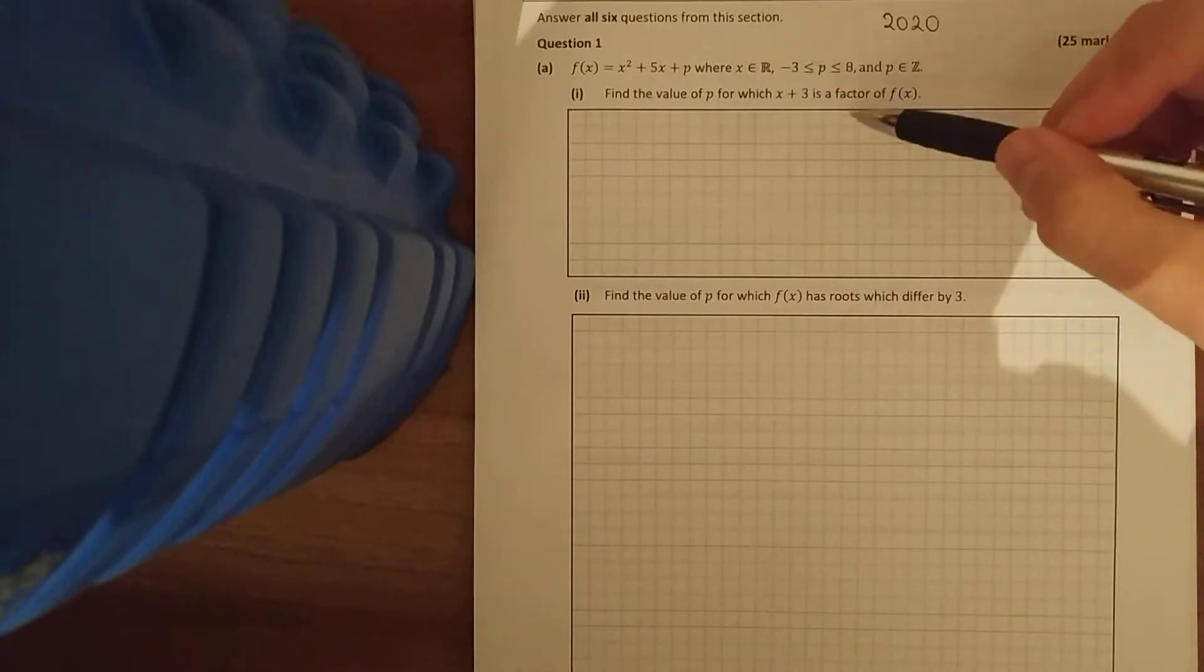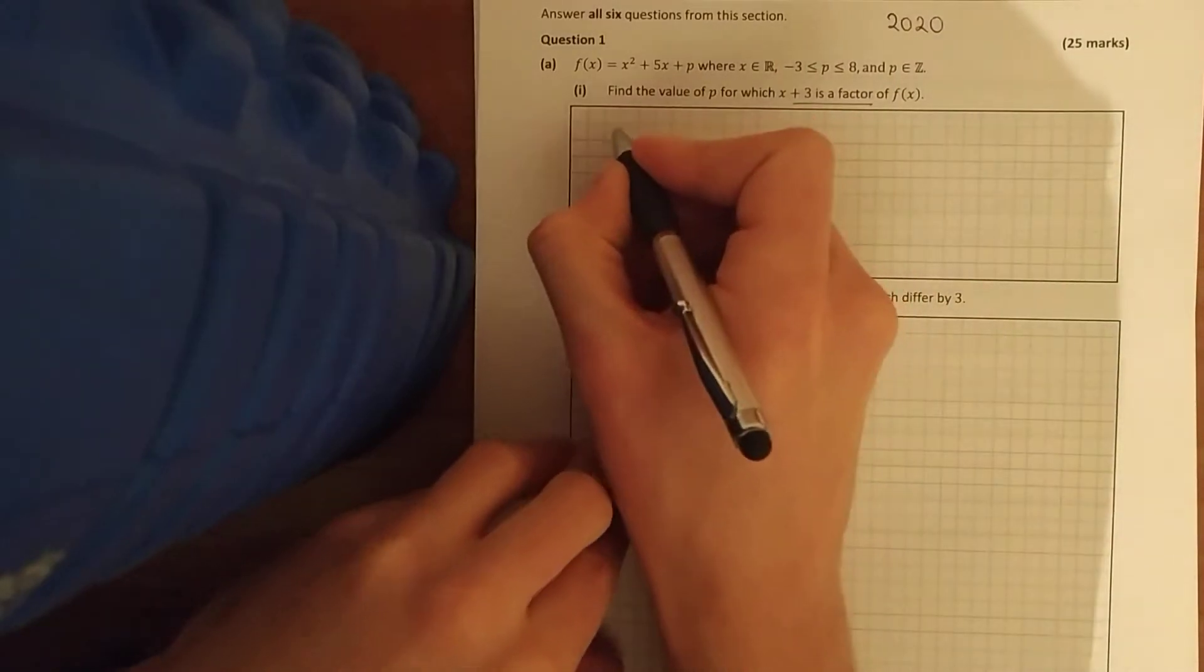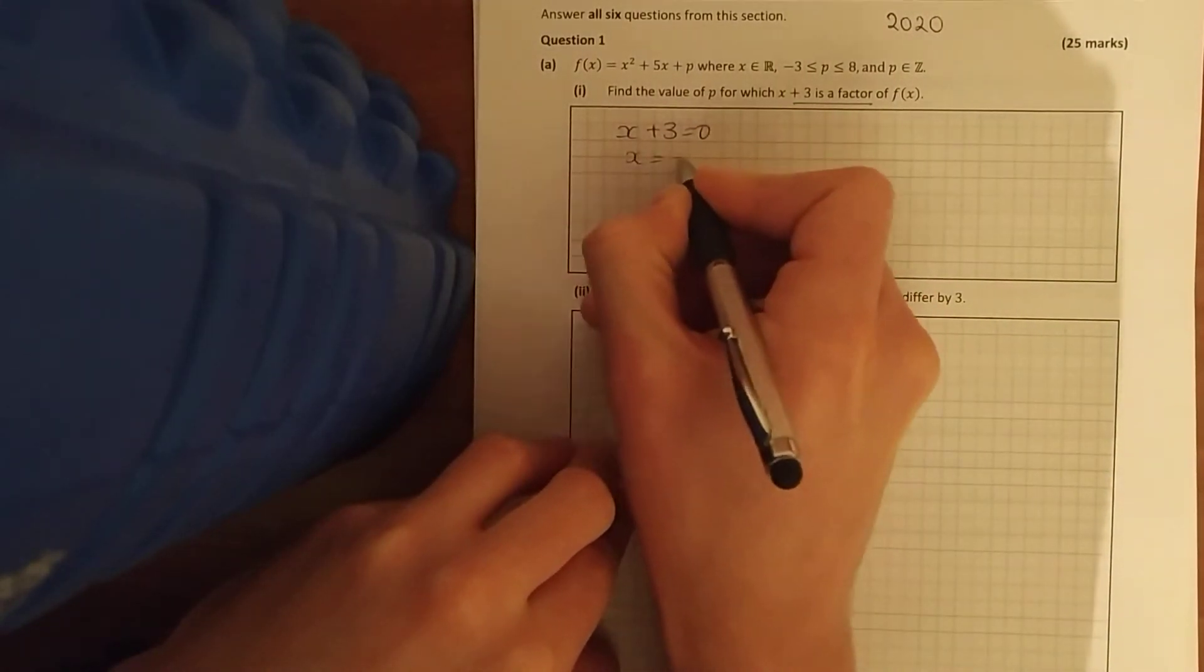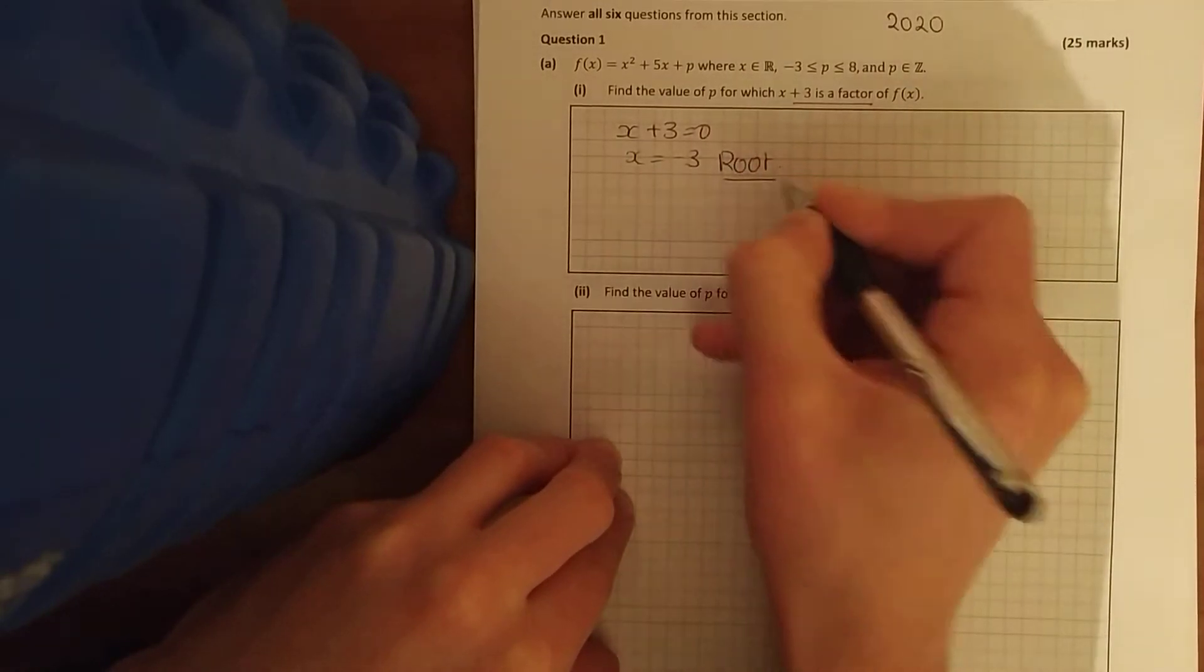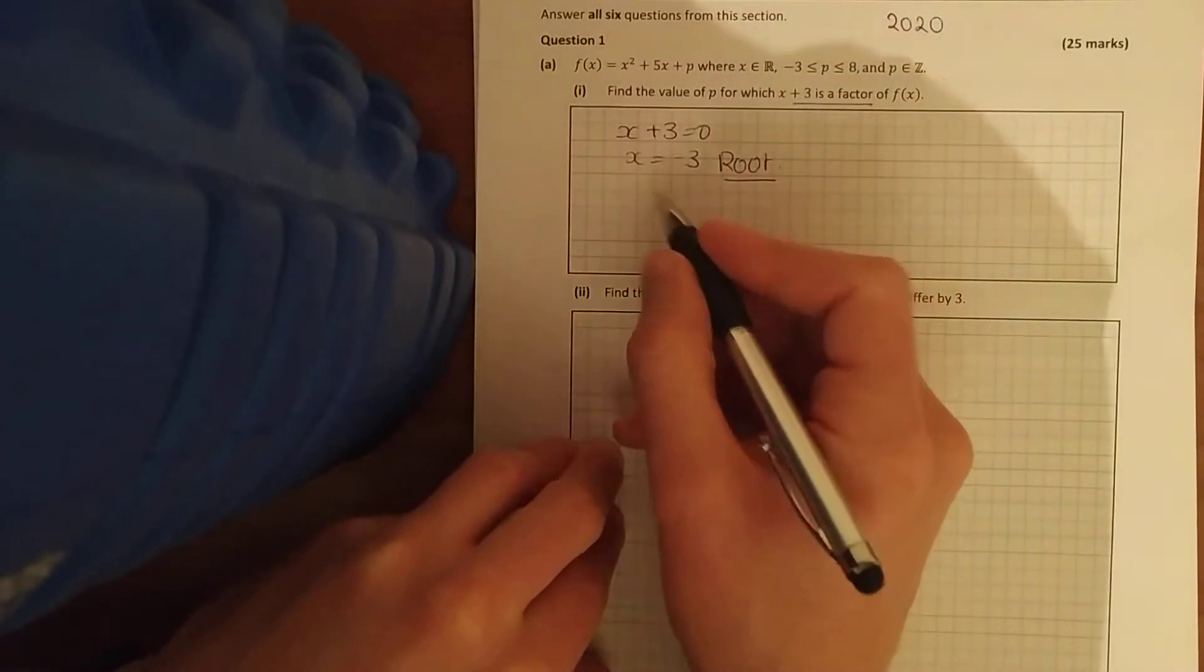Find the value for p for which x plus 3 is a factor. Now if this is a factor, that automatically implies x plus 3 is a factor, that implies that x equals minus 3 is your root. Once you know something's a root, substitute it into the equation and it equals zero because that is the point where it cuts the x-axis.